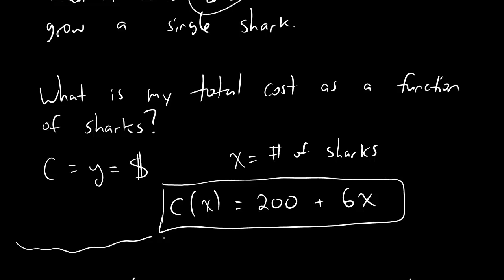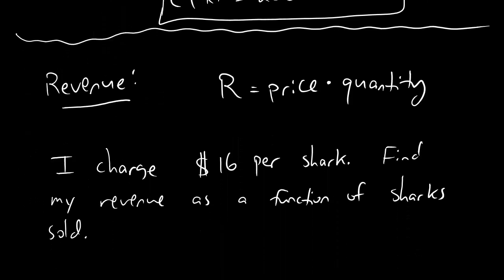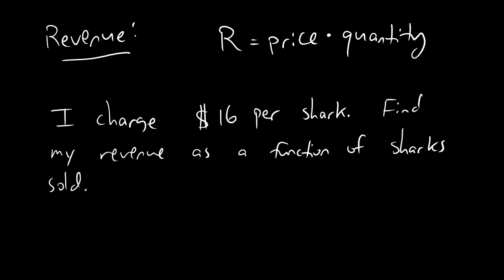All right, that's cool. That's cost. Let's draw a little squiggly line and move on. Next topic, revenue. So the basic formula for revenue that you guys need to know is that revenue equals price times quantity. And now we have this little thing that says, I charge $16 per shark, find my revenue as a function of sharks sold.